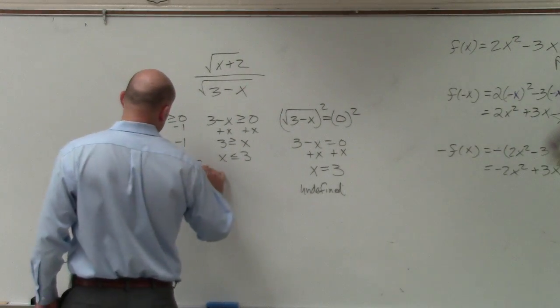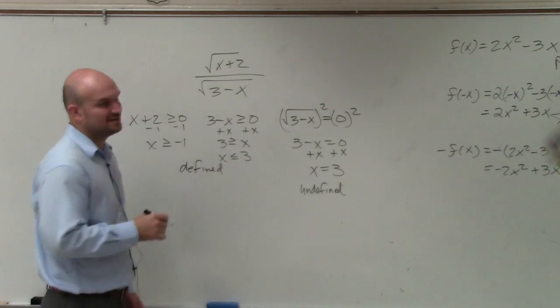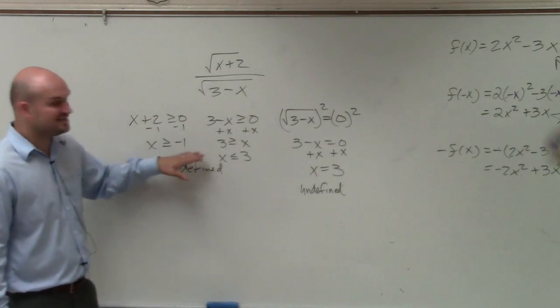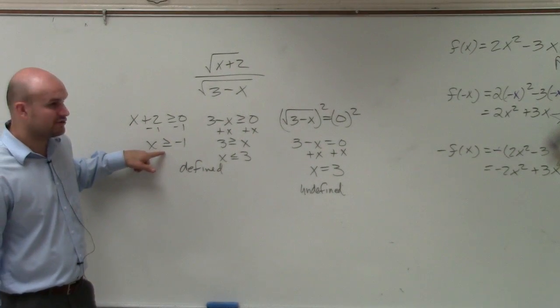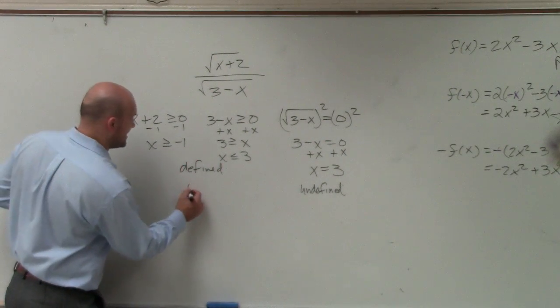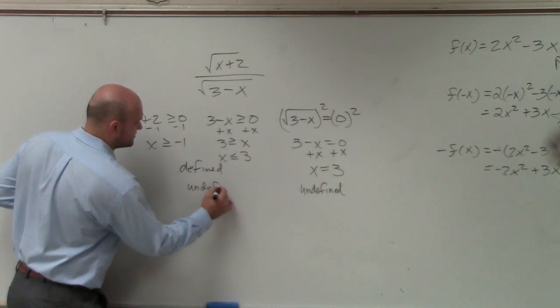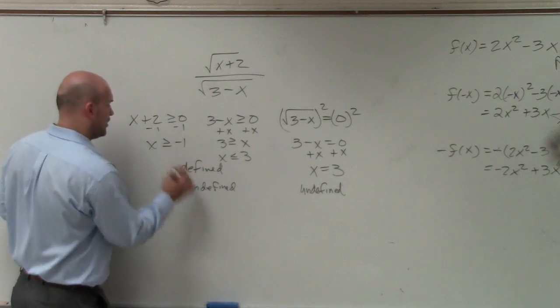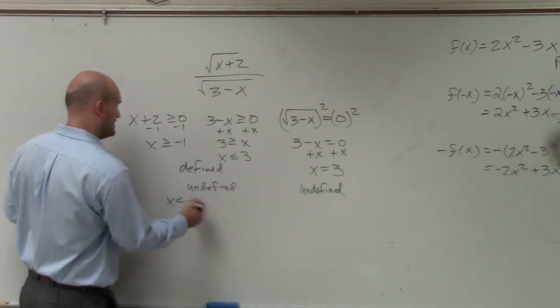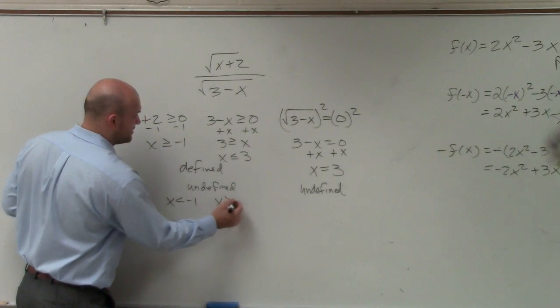It's defined—and that's where this gets a little confusing. It's undefined at x equals 3. It's defined for all values that are greater than negative 1 but less than 3. So therefore, it's undefined for all values that are less than negative 1 and values that are greater than 3.